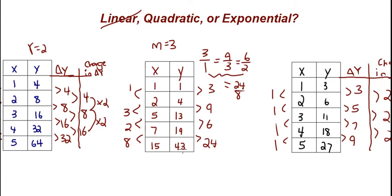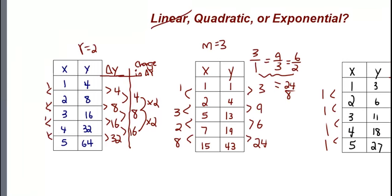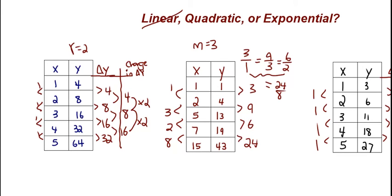So to summarize: for linear, we check if the ratio of delta y to delta x is the same for every consecutive pair — that consistent ratio is the slope. For quadratic, we look at the change in delta y and check if we're adding the same amount each time. For exponential, we look at the change in delta y and check if we're multiplying by the same ratio each time. Make sure to check every single pair of values — don't skip the last one, because that could be the kicker that changes the answer.